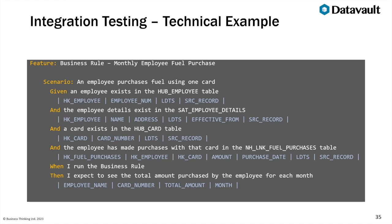For the developers, there's a more technical version of the same feature with greater depth — specifying what entities are needed from the raw vault and what we expect to see in the output. Python Behave allows you to use context tables to supply test data, insert it into your test area in the warehouse, run the business rule SQL logic, and then run assertions to assure it's behaving as expected. The technical scenario would be: Given an employee exists in the Hub Employee table, and employee details exist in the Satellite Employee Details, and a card exists in the Hub Card table, and the employee has made purchases in the non-historized Link Fuel Purchases table, When I run that business rule, Then I expect to see the total amount purchased by the employee for each month.